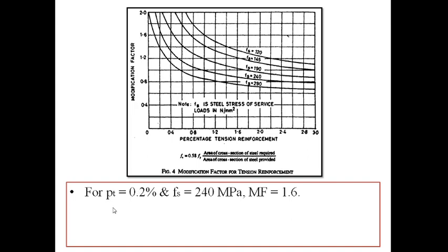Using this graph, let me assume that I have provided a tension steel percentage of 0.2% and FS is 240 MPa. When I look into the graph given by the IS code, the point 0.2% tension steel, taken up to the curve for FS = 240 MPa, gives a modification factor of approximately 1.6.